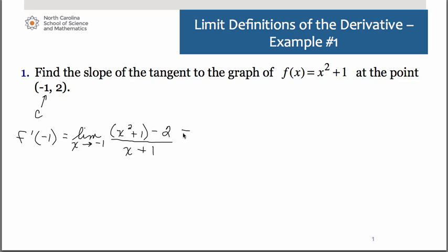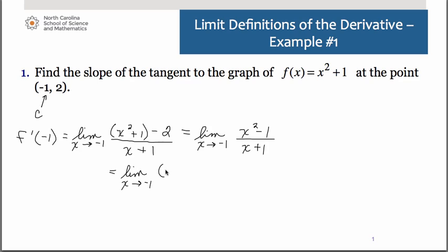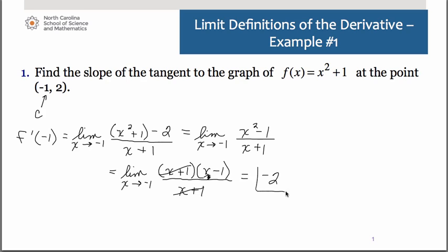So as we continue on from there, you really just have a limit that you want to evaluate. We're doing the limit as x approaches negative 1. When we simplify the numerator, we have x squared minus 1, so we'll be able to factor that — it's the difference of two squares, of course. The x plus 1's cancel out. So now when we substitute negative 1 in for x, we get negative 2. So that would be the slope of that curve at the point negative 1, 2.